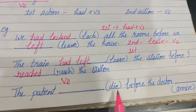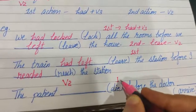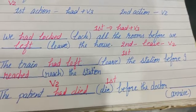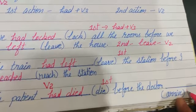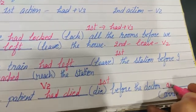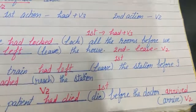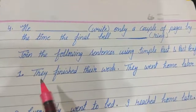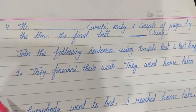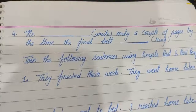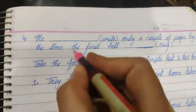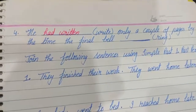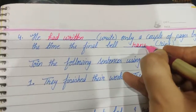The patient — die before the doctor arrive. This was the first action, so: the patient had died before the doctor — this action came later, so we use V2, and the answer becomes arrived. Next example: He — write only a couple of pages by the time the final bell — ring. Which action was completed first? He had written only a couple of pages. And which action occurred later? The bell rang — ring V2 would become rang.